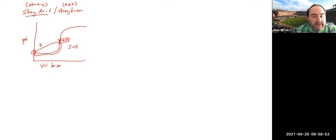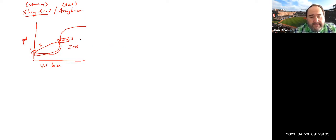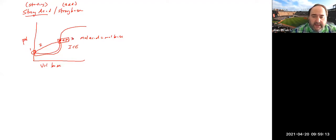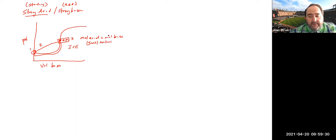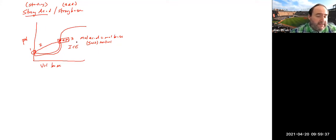When we reach the equivalence point, that's where the moles of acid equal the moles of base. In a strong acid/strong base titration, what we're left with is a neutral salt — it's neutral because it comes from a strong acid and a strong base. That means the pH at the equivalence point should be 7.